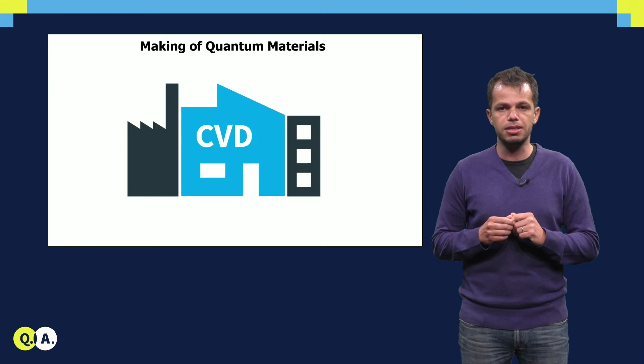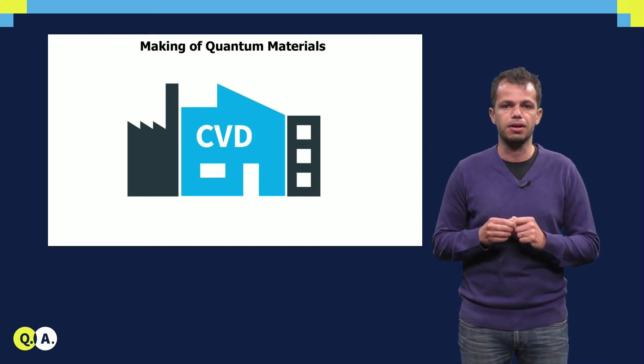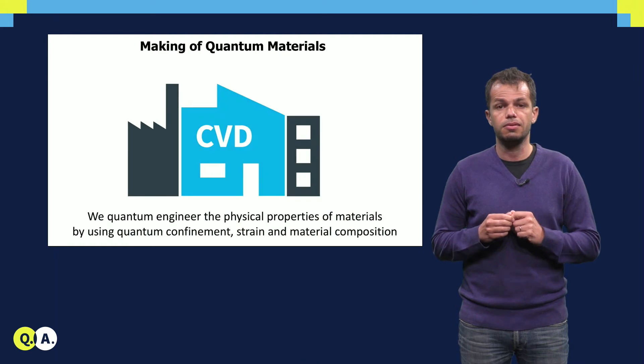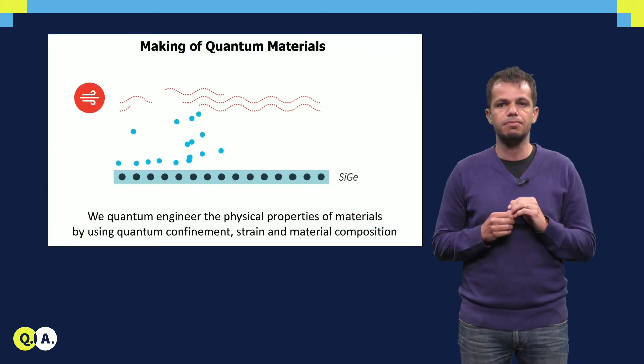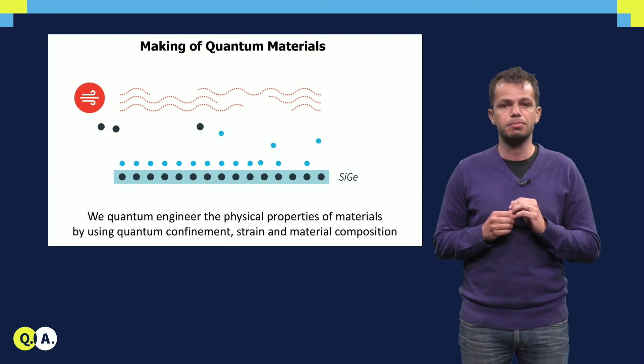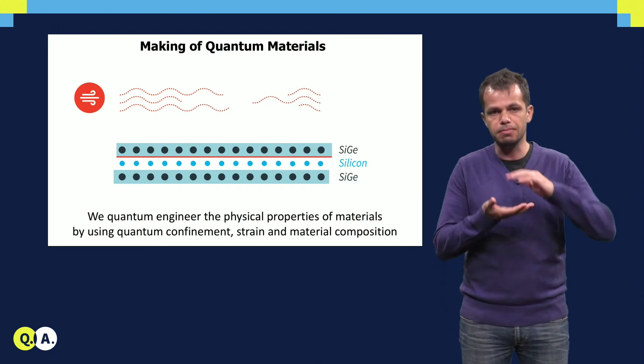Chemical vapor deposition, or CVD, is an industrial process that uses high-purity gases to make high-quality materials with desired physical and electronic properties. For example, by depositing layers of silicon and silicon germanium, we can tune the lattice parameter of silicon to be larger than usual and match that one of silicon germanium.